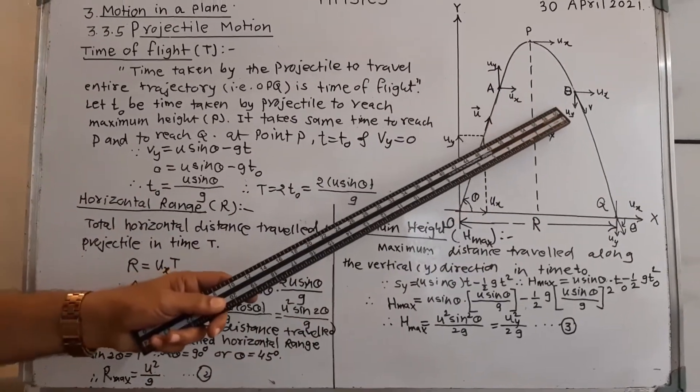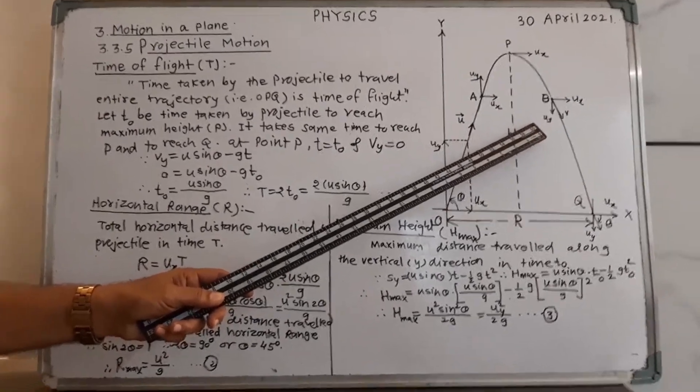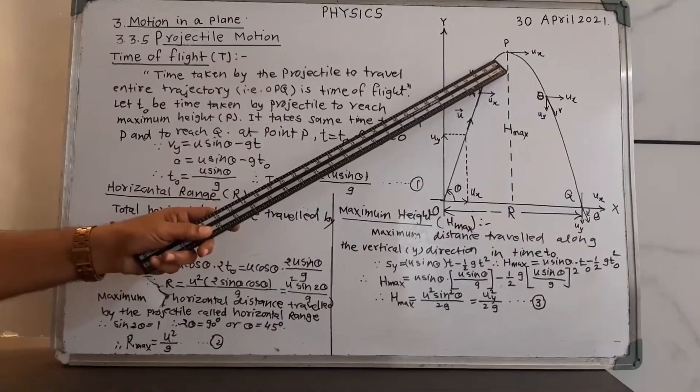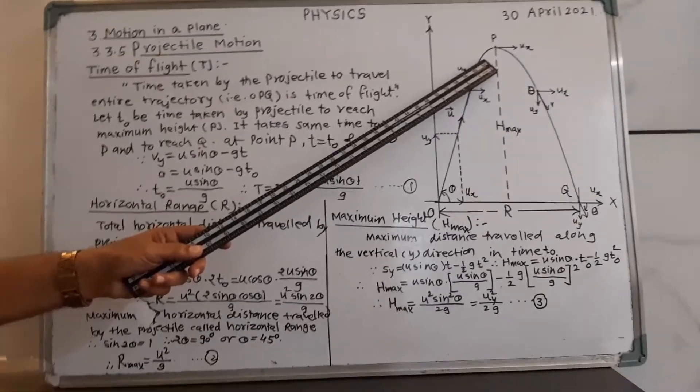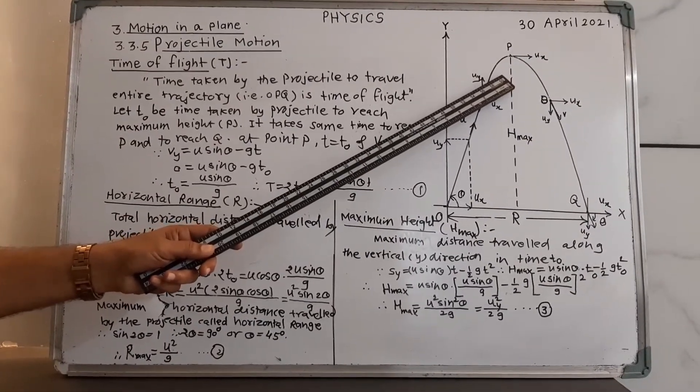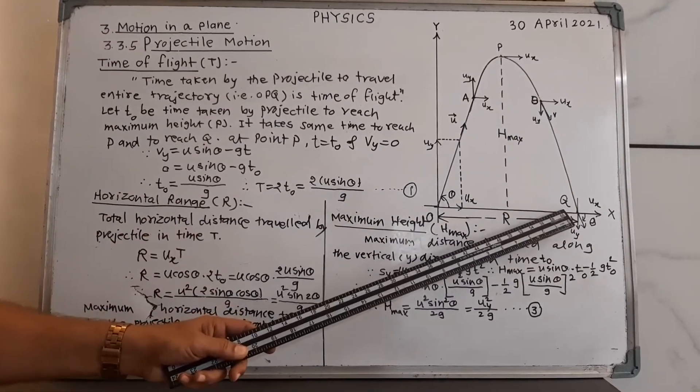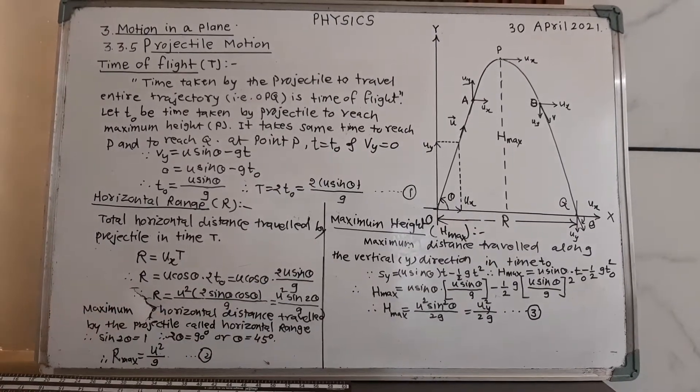The projectile has a trajectory OPQ as shown in figure. A and B are two intermediate points. Point P is a point where the projectile has maximum height while the point Q is on the ground.